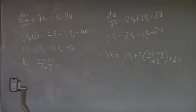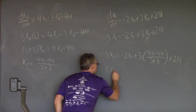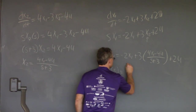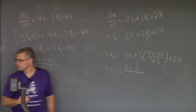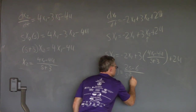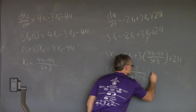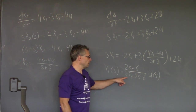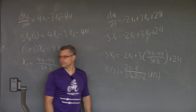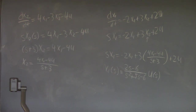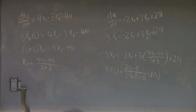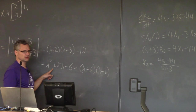Rather than go through all the algebra, I'll just write the answer. When it's all said and done, you get x1(s) with numerator 2s minus 6 and denominator s squared plus 5s minus 6. You might notice the denominator s squared plus 5s minus 6 is the same as the characteristic polynomial lambda squared plus 5 lambda minus 6 — they're the same polynomial.